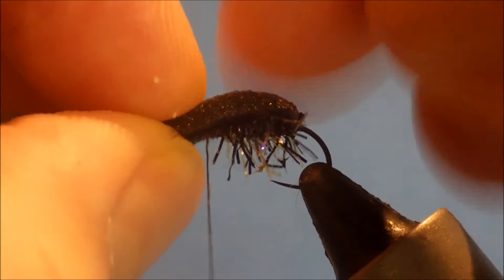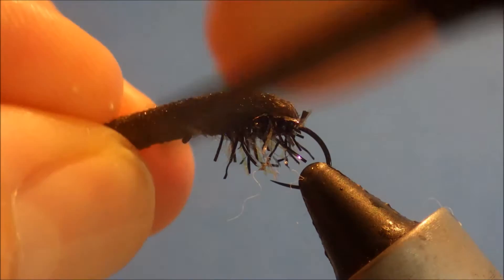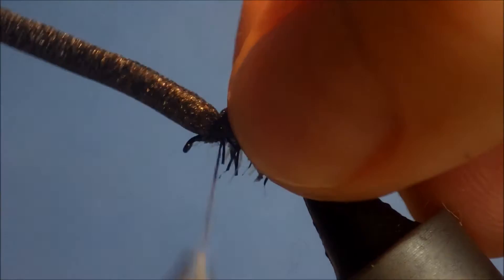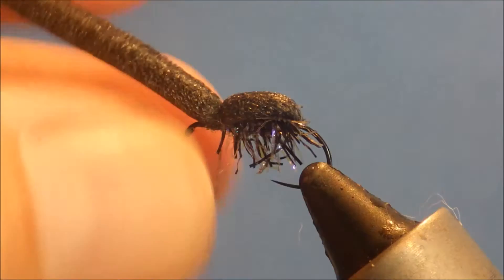And I'll just bring the foam forward. Pull it kind of half tight until you get roughly the shape that you like. Then catch it in, right in front of where you've tied the straggle string. And then, in touching turns, trap it down forward and keep going on the way to the eye.